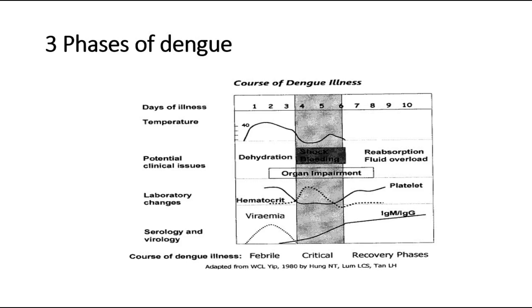The critical phase is the most dangerous phase to look out for. It usually starts on day three of illness and lasts for around 24 to 48 hours. During this phase, there will be an increase in capillary permeability causing plasma leakage, which will cause increasing hematocrit levels. Clinical deterioration occurs, and the patient may have shock in severe dengue, with severe hemorrhage and organ impairment, requiring more monitoring in the ward.